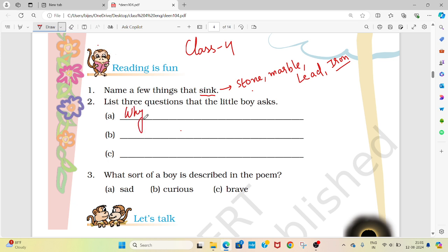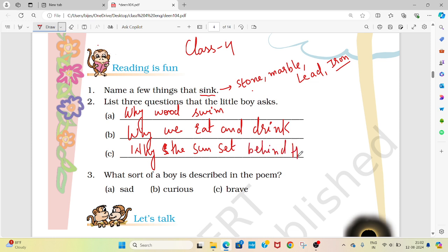For example, why would we swim? Why we eat and drink? Why the sun sets behind the hills? Like this I have made three questions. You can also make your own questions that were asked in the poem by the student. Why would we swim? Why we eat and drink? Why the sun set behind the hills. These are the three questions.